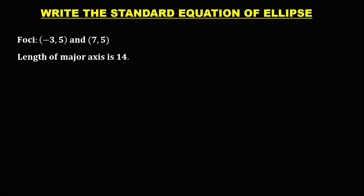First, we need to plot the graph of this ellipse on a plane, with positive y, positive x, negative y, and negative x axes. From the given coordinates of the foci, x is negative 3 and y is positive 5.